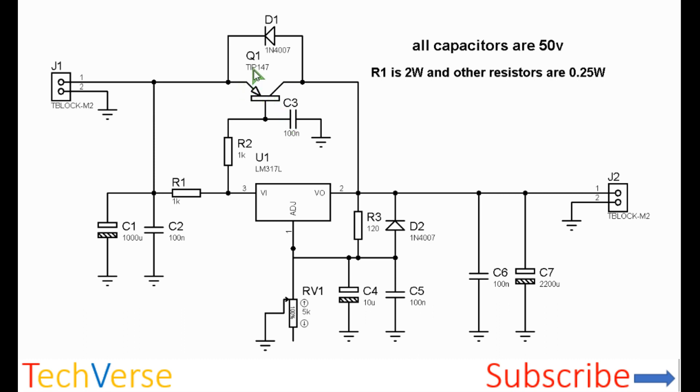The power transistor is the TIP147 PNP transistor. This serves as a current booster for the LM317.